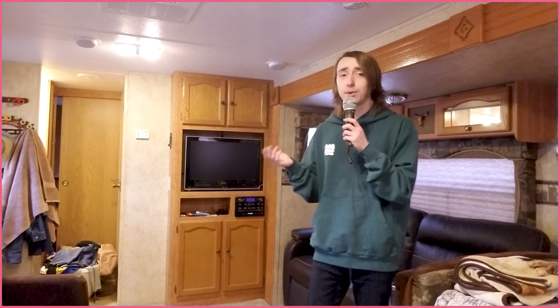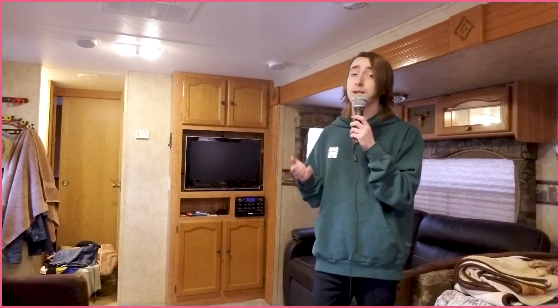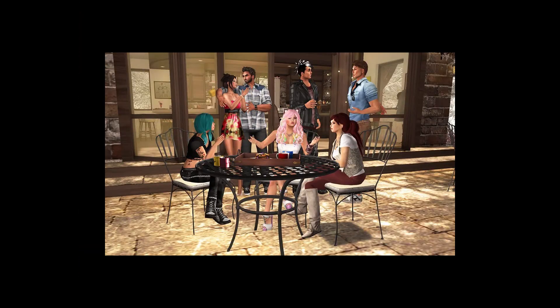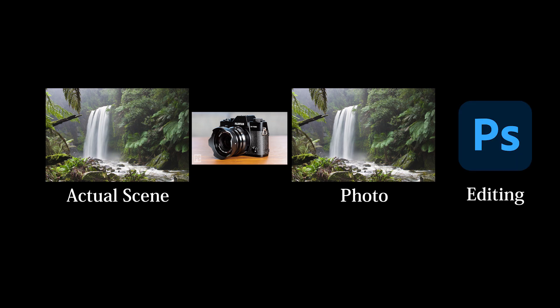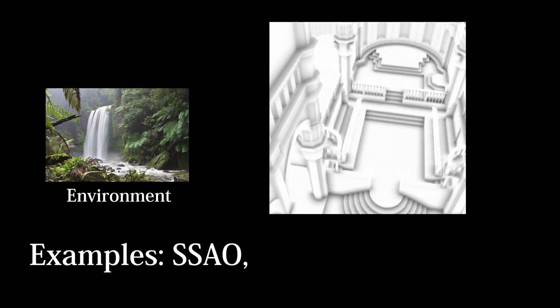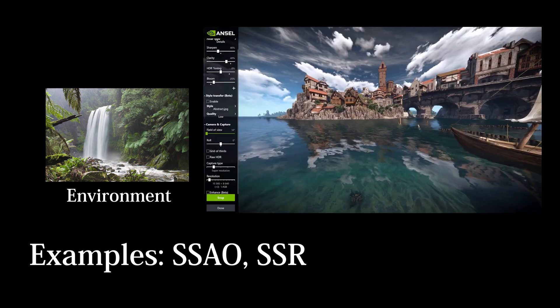It turns out the answer is pretty simple. Post-processing effects come in the order that they would come in in the real world. In real life, you have an environment you want to take a picture of with a camera, then you have the photo the camera took, and then you have the editing software you're using to change the photo. With this model, we can determine that post-processing effects that affect the environment come first — effects like screen space ambient occlusion, screen space reflections, or fog.